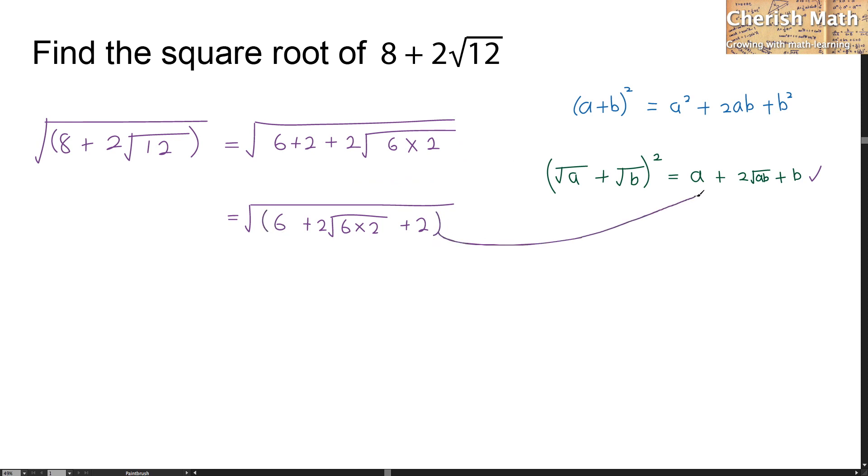Within the bracket, it looks very similar to the green part that I have done earlier. Now, what is the value of a? The value of a is just the square root of 6. I'm going to add up with the square root of 2, which is the value of b.